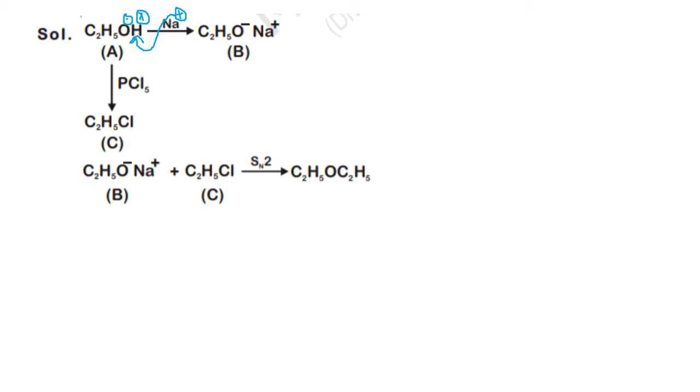Now B and C are reacted together in order to form diethyl ether. So here what happens in this reaction is Na plus and Cl minus react to form NaCl, and from here C2H5O minus gets combined with C2H5.